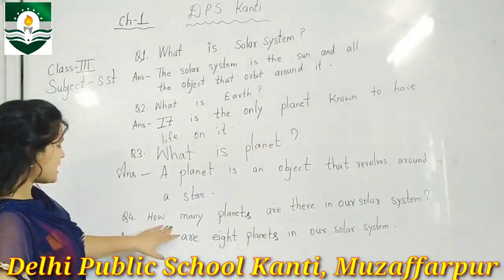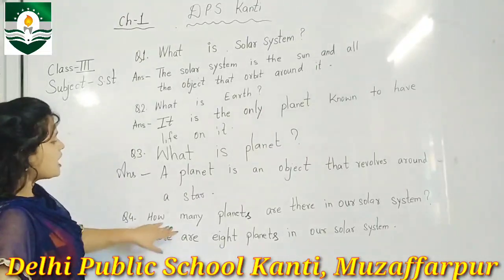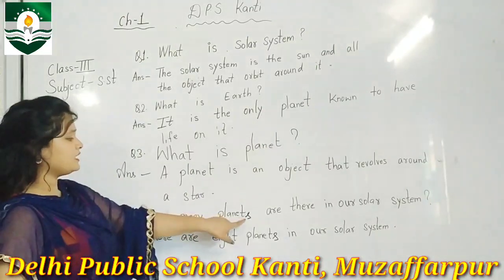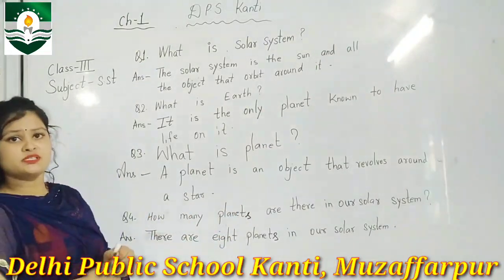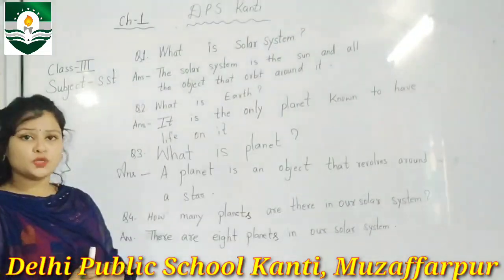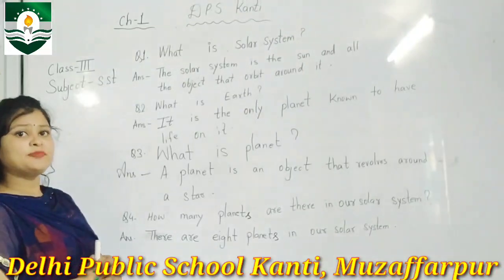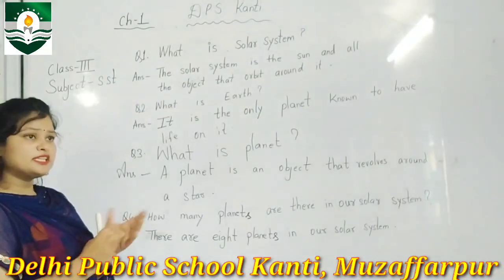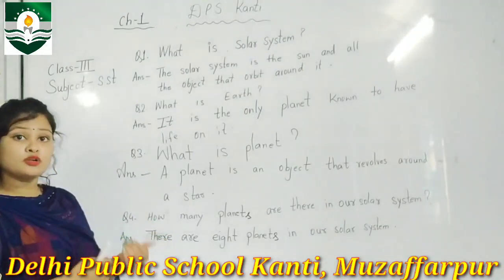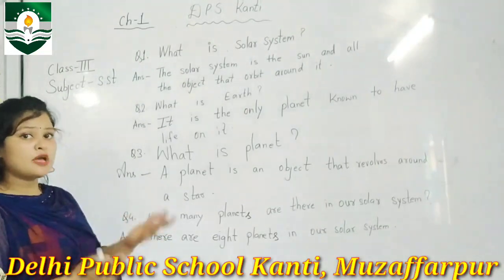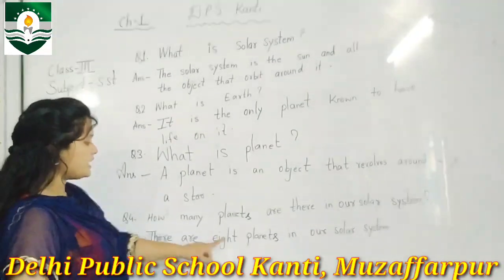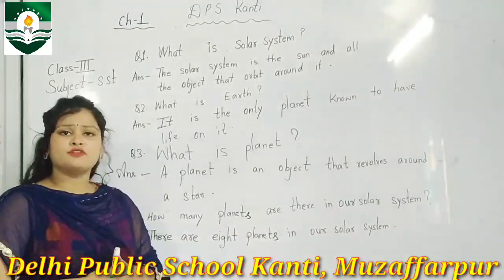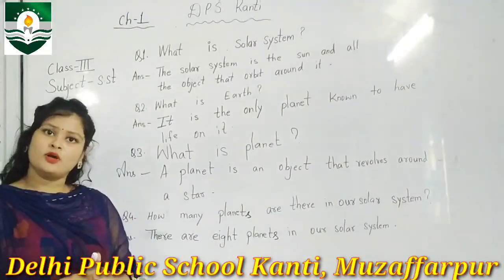Here is the last question: how many planets are there in our solar system? There are 8 planets in our solar system.